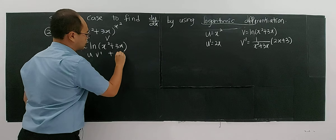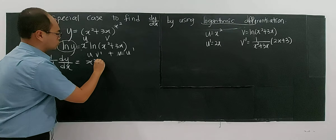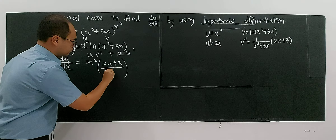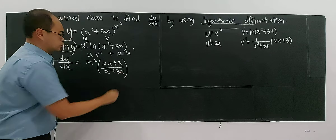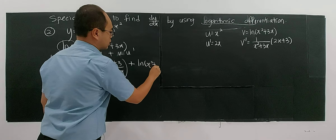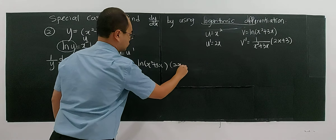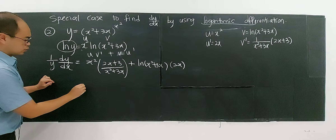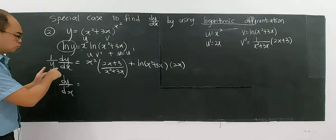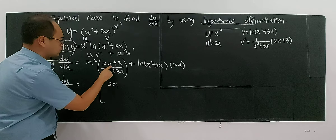Now I start differentiating. For ln y, you have (1/y)(dy/dx). For the right side, you have a product u·v. If you're worried about careless mistakes, you can do it separately. Let u = x², and v = ln(x² + 3x). Then u prime = 2x, and v prime = (2x + 3)/(x² + 3x) by differentiating ln(x² + 3x). Now put everything into the product rule formula: u·v prime + v·u prime.